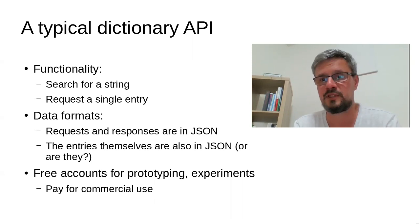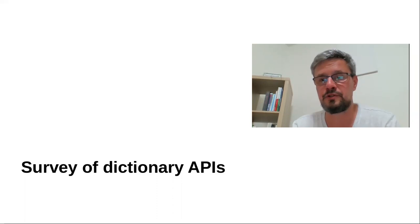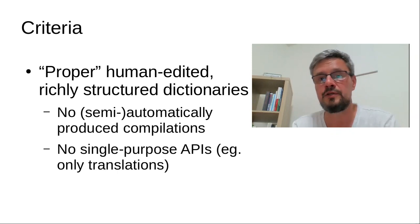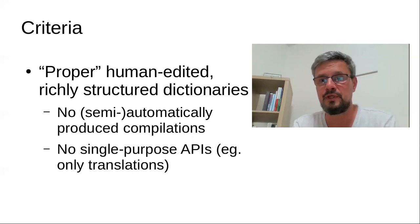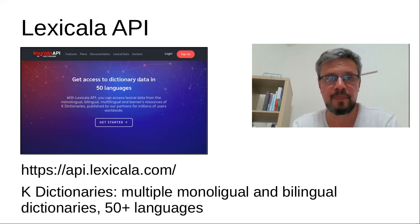Now I'd like to take you on a short tour of dictionary APIs I've surveyed for this presentation. It's not necessarily a hugely representative survey, but I think I've covered all the major players. My criterion for inclusion is that the API must give you access to properly, professionally produced, human-edited, richly structured dictionaries — where you can actually get an entire dictionary entry with headwords, senses, usage examples, and things like that. The first one to mention is definitely Lexicala, an API published by K Dictionaries. This is a very nice API; I would hold it up as an example of good practice.